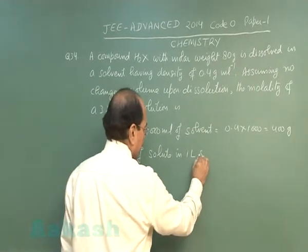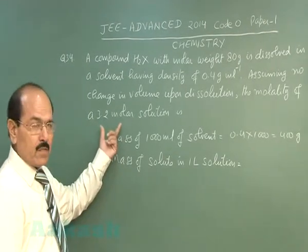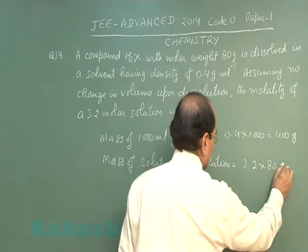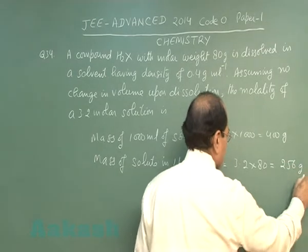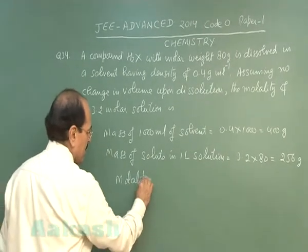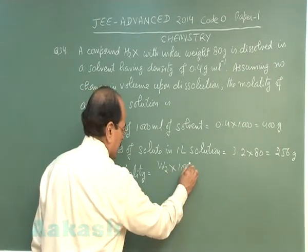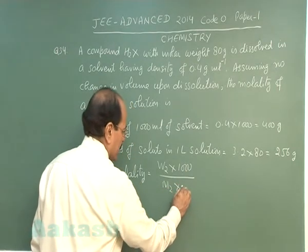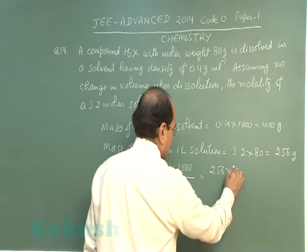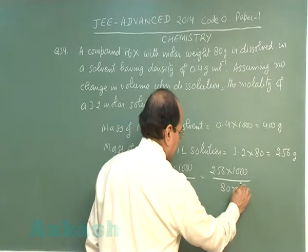Mass of solute in 1 liter solution: we have been given the molarity of solution as 3.2, so 3.2 multiplied by molar mass, that is 256 gram. Molality is given by mass of solute into 1000 divided by 80 into 400.